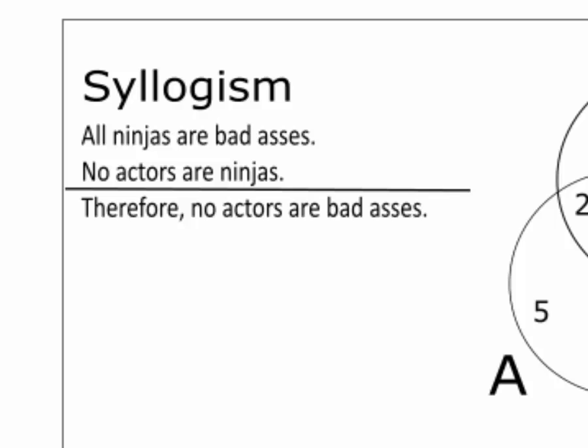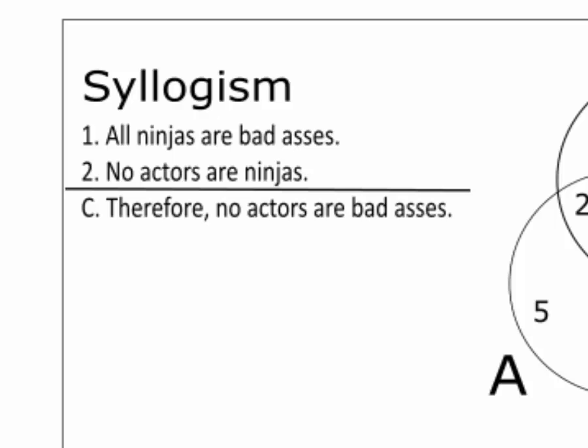A categorical syllogism has two premises and a conclusion. There are three terms. A term is a word or phrase that denotes a set. In this case, the terms are ninjas, badasses, and actors.